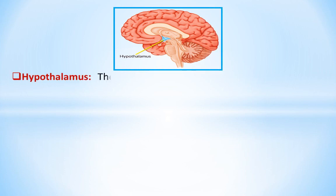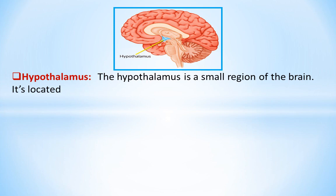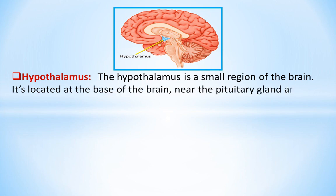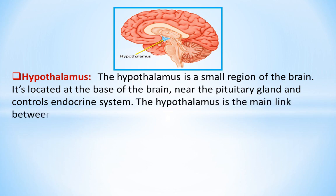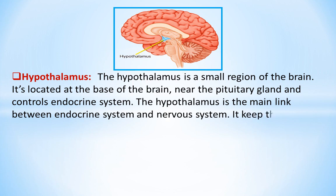Hypothalamus: The hypothalamus is a small region of the brain. It is located at the base of the brain, near the pituitary gland, and controls the endocrine system. The hypothalamus is the main link between the endocrine system and the nervous system.